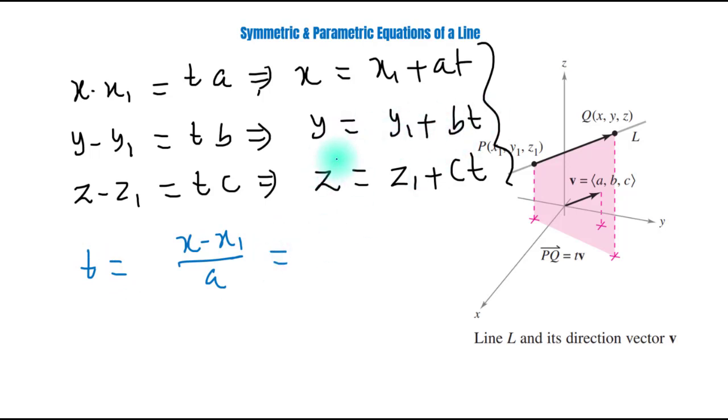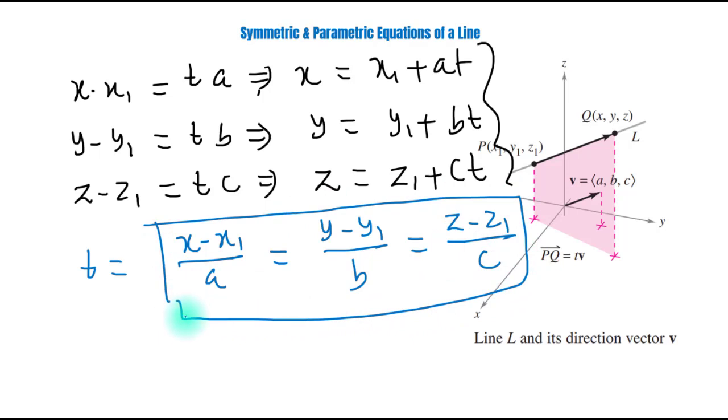From this equation, we can write t equals y minus y1 upon b, and from this equation, we can write t equals z minus z1 upon c. So, this is called symmetric form of equation of a line.